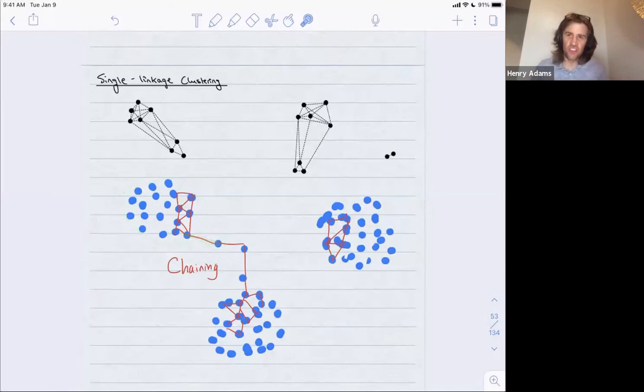Other versions of hierarchical clustering will instead look at, say, the average distance between this point and all of the other points in that current cluster. So when you look at merging two clusters based on the average distance instead of the shortest distance between those two clusters, you're much less susceptible to this chaining phenomenon.